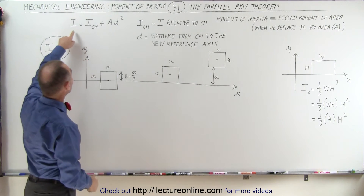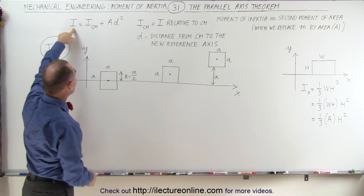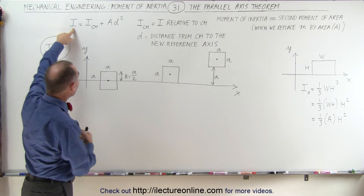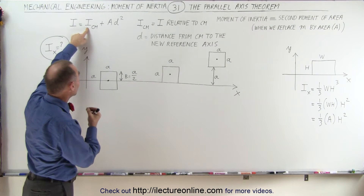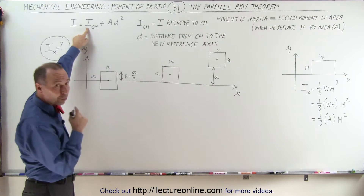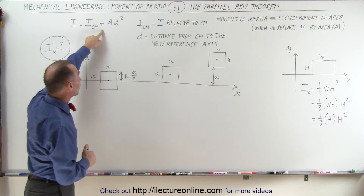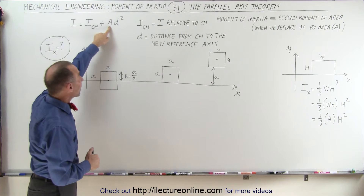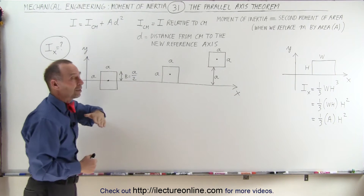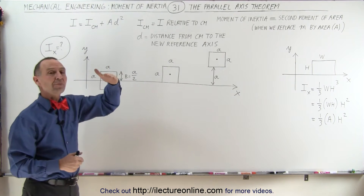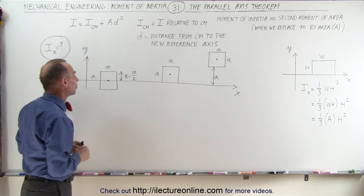The equation reads as follows: the moment of inertia relative to some axis is going to be equal to the moment of inertia of that object relative to its center of mass, plus the area of the object times the distance squared that you move the object away from its original position.